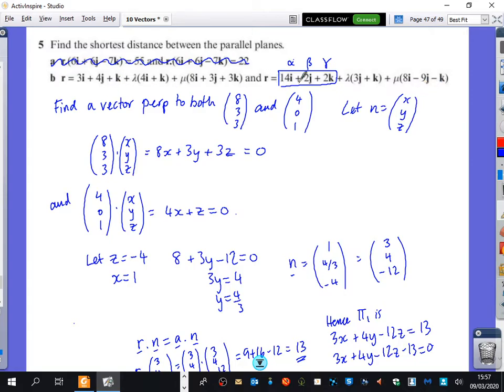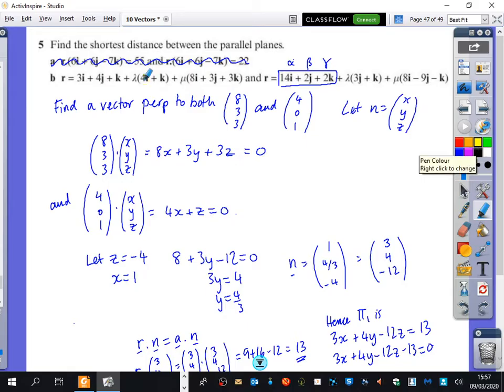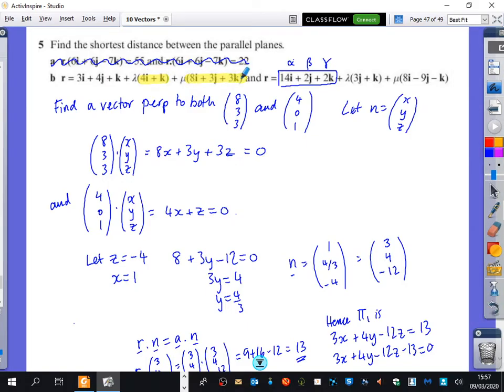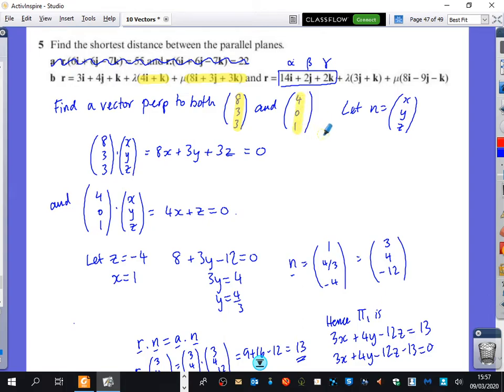So you need to convert one of the parametric forms into Cartesian form. To do that, you need to find a vector which is perpendicular to this and this. Hence me having the 8, 3, 3 from here and the 4, 0, 1, and we're trying to find something that's perpendicular to both of them.